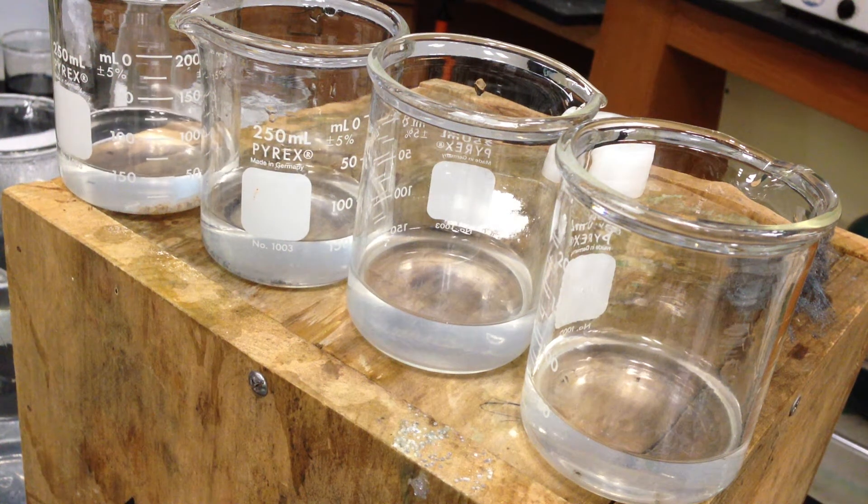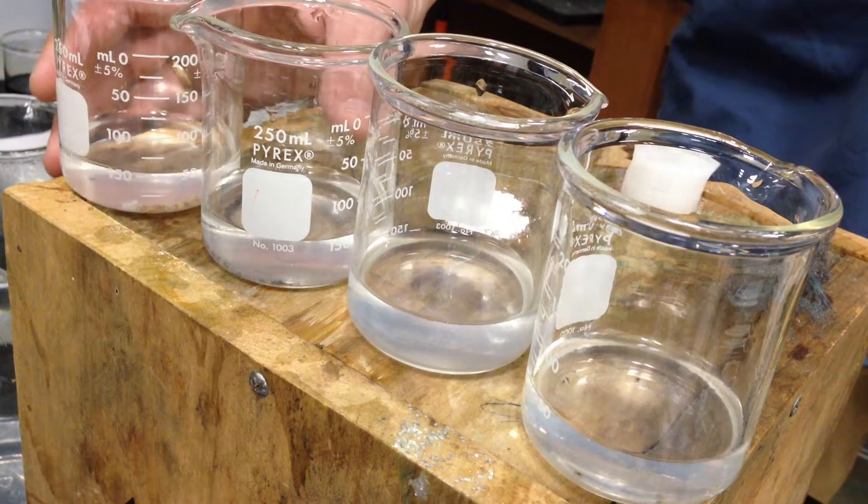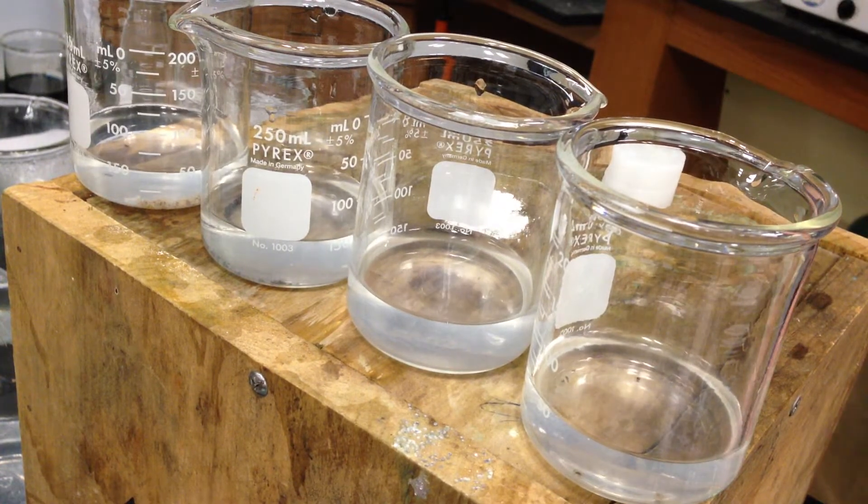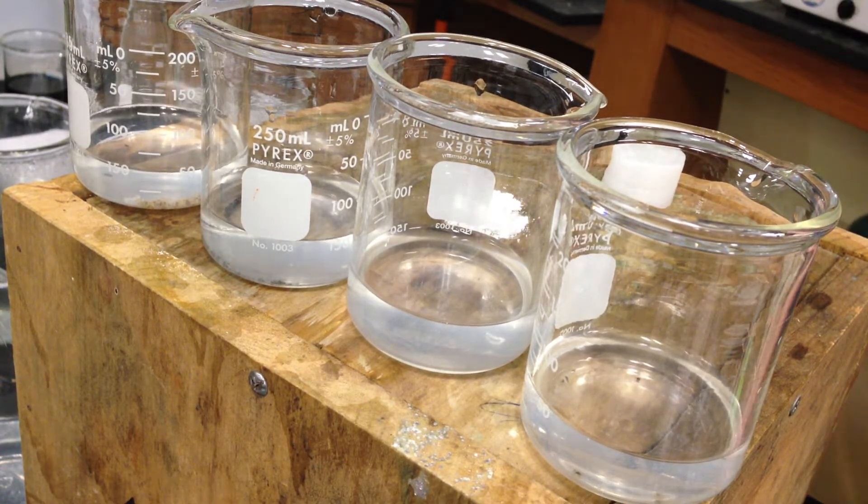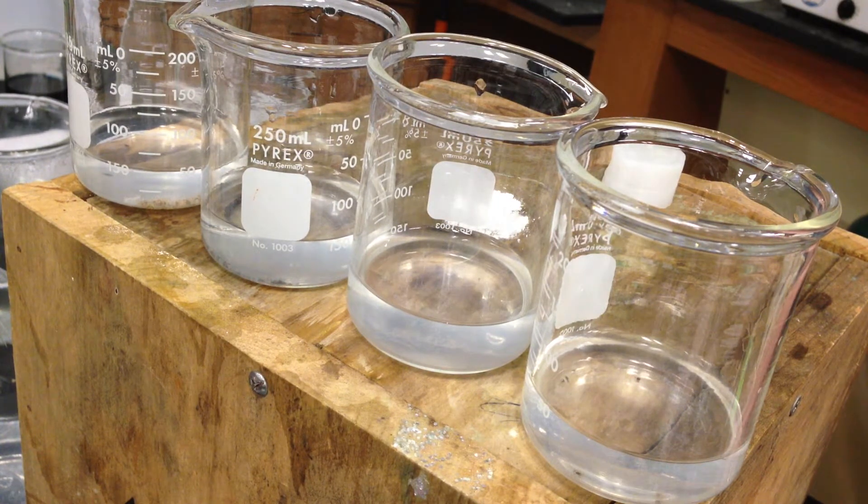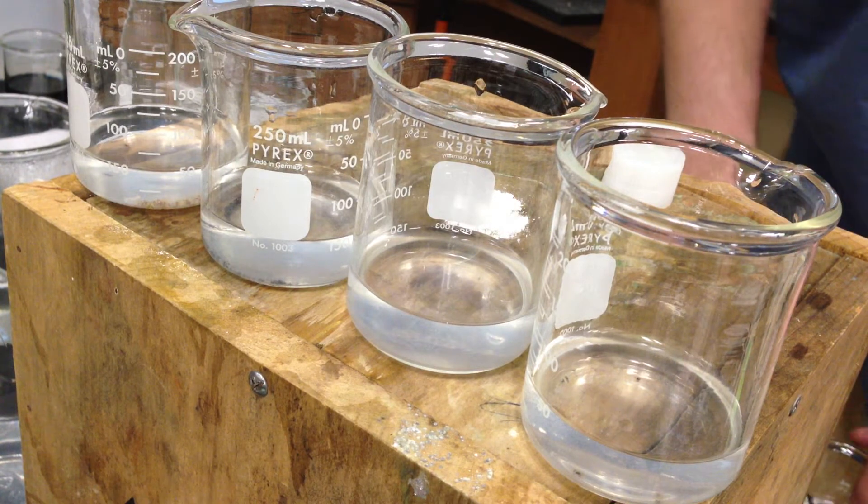Okay, so we've got some beakers here that have varying concentrations. These have the very classic starch reaction with potassium iodide. And all I'm doing is pouring solutions with varying concentrations into these beakers.